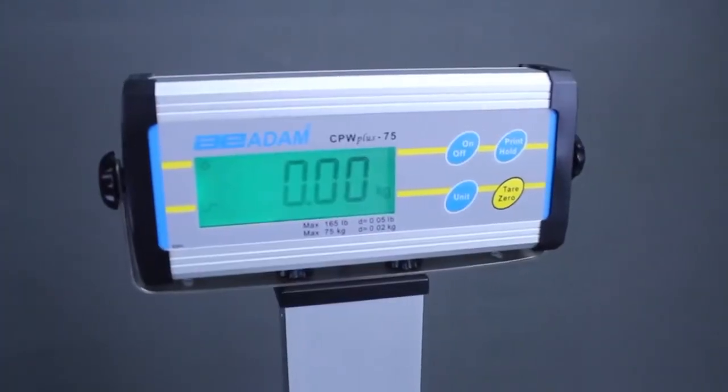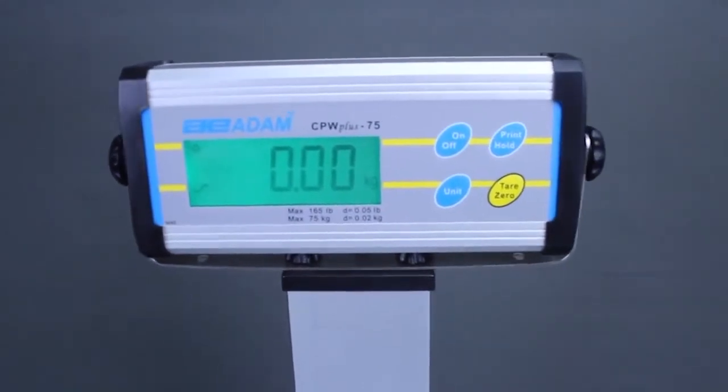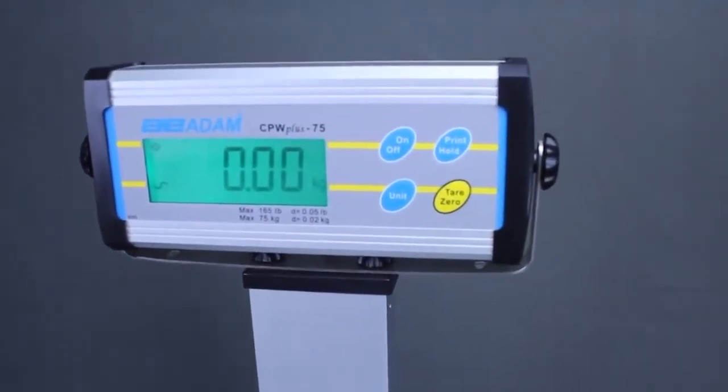The CPW Plus P offers a pillar-mounted display making the indicator easy to read from a distance.